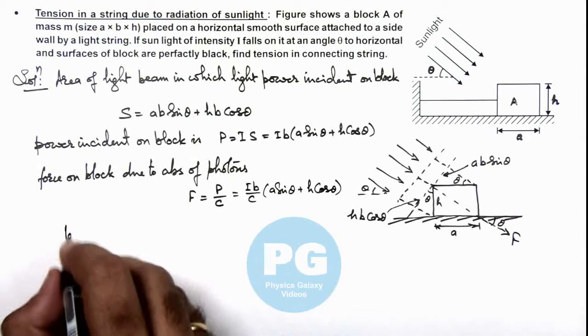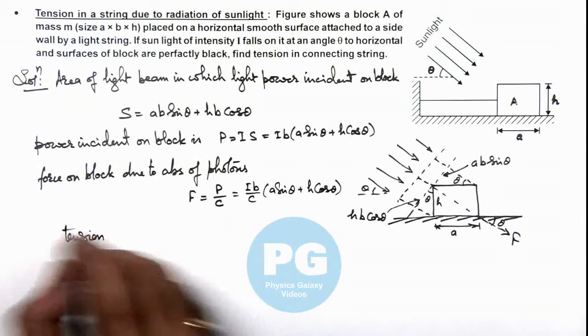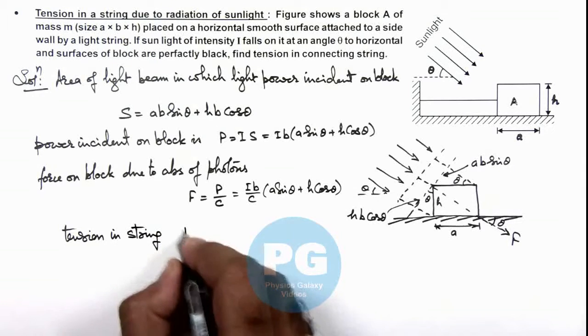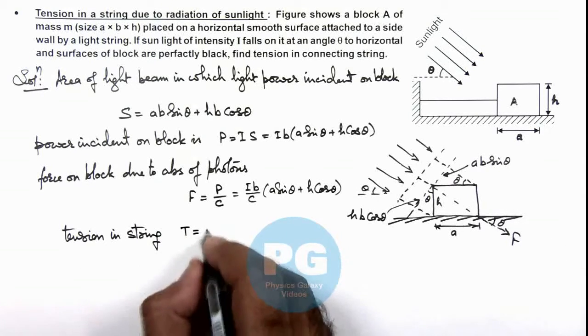And here, if we calculate the tension in string, this is caused by the horizontal component of the force, so this can be written as F cosθ.